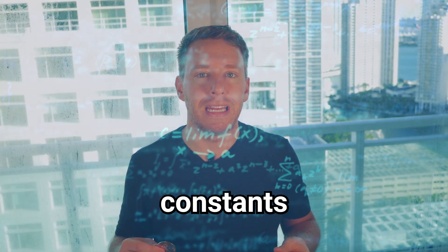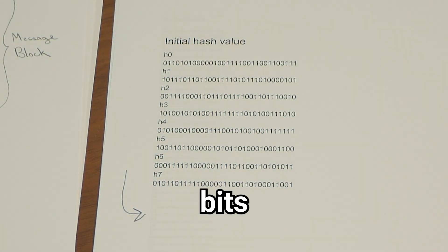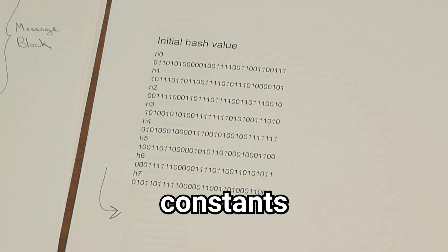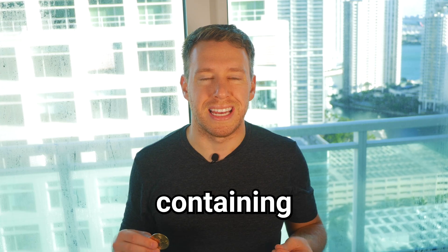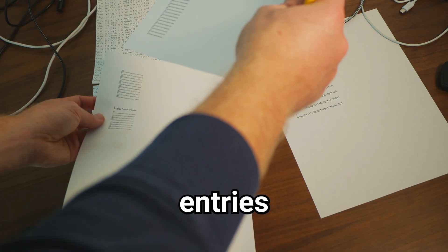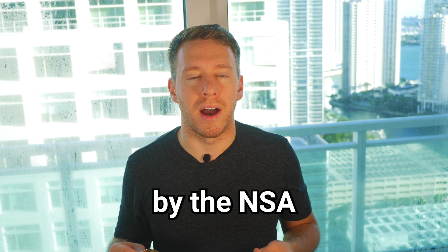Next we stand up our 8 constants, each containing 32 bits. We will transform these constants until we've created our final hash. We also need to reference another table of constants containing 64 32-bit entries. These constants are provided by the NSA.